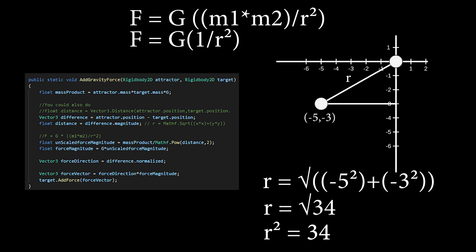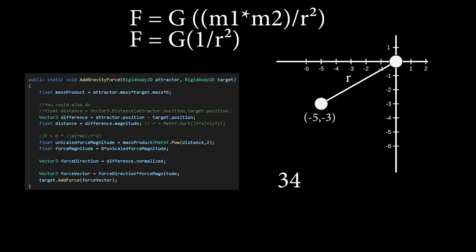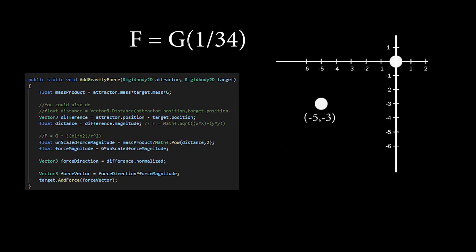or by using Vector3's magnitude method. Now, if we divide the mass product over distance squared, we have our force. We then scale it by multiplying it with our constant, which I have set to 1, so really you could say it's out of the equation. We now know how strong the attractor's gravity force will be on the target.